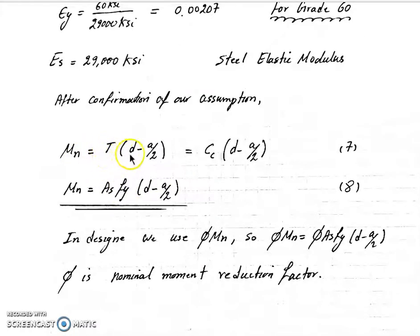We get Cc multiplied by d minus a over 2. We have the T value, As fy, so our Mn is equal to As fy multiplied by d minus a over 2.